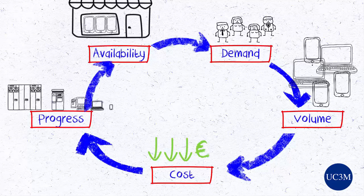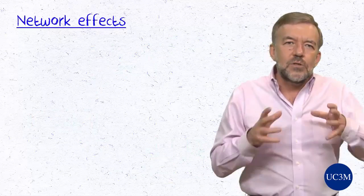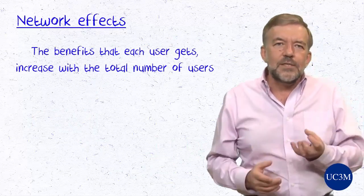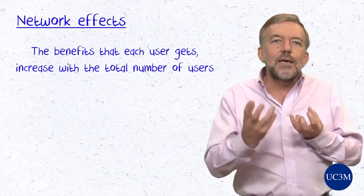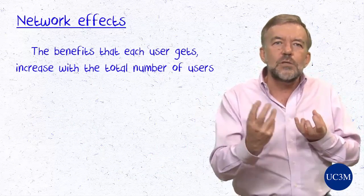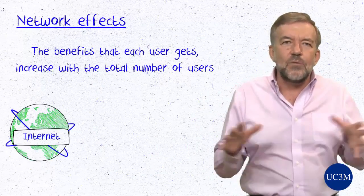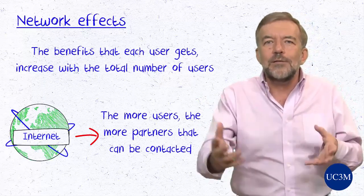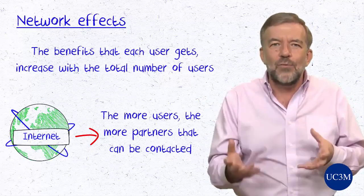These feedback loops are particularly conspicuous in systems, such as the internet, subject to what are actually named network effects. This refers to systems in which the benefits that each user gets increase with the total number of users, as it normally happens in networks, since more users imply more partners that can be contacted through the network.